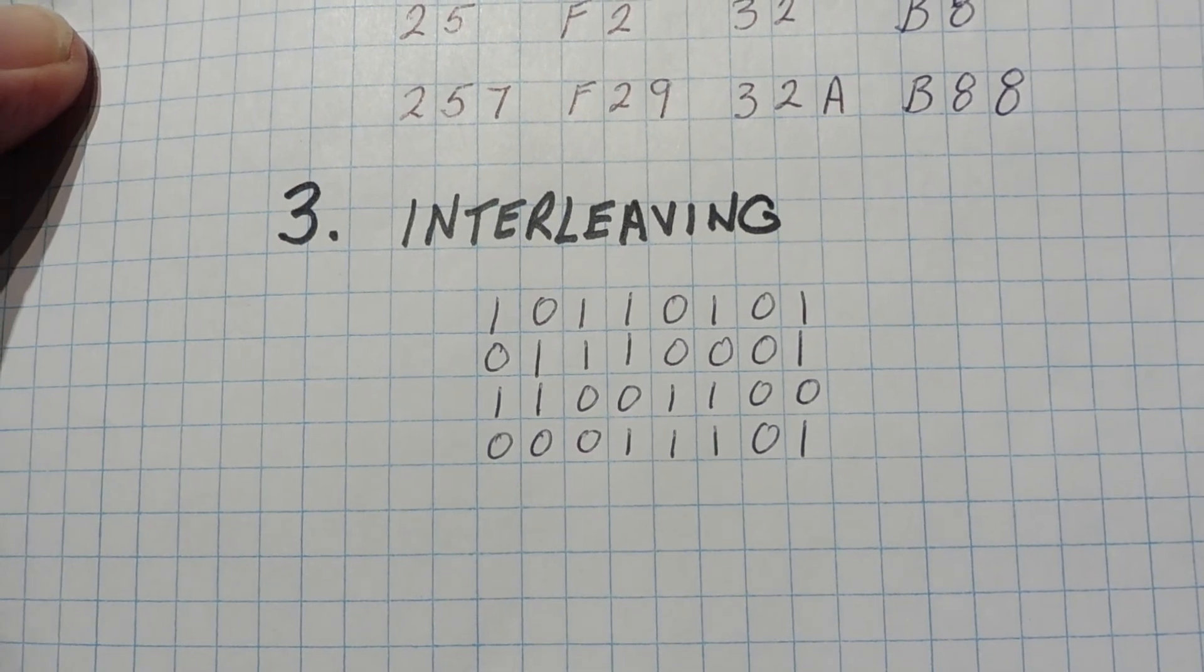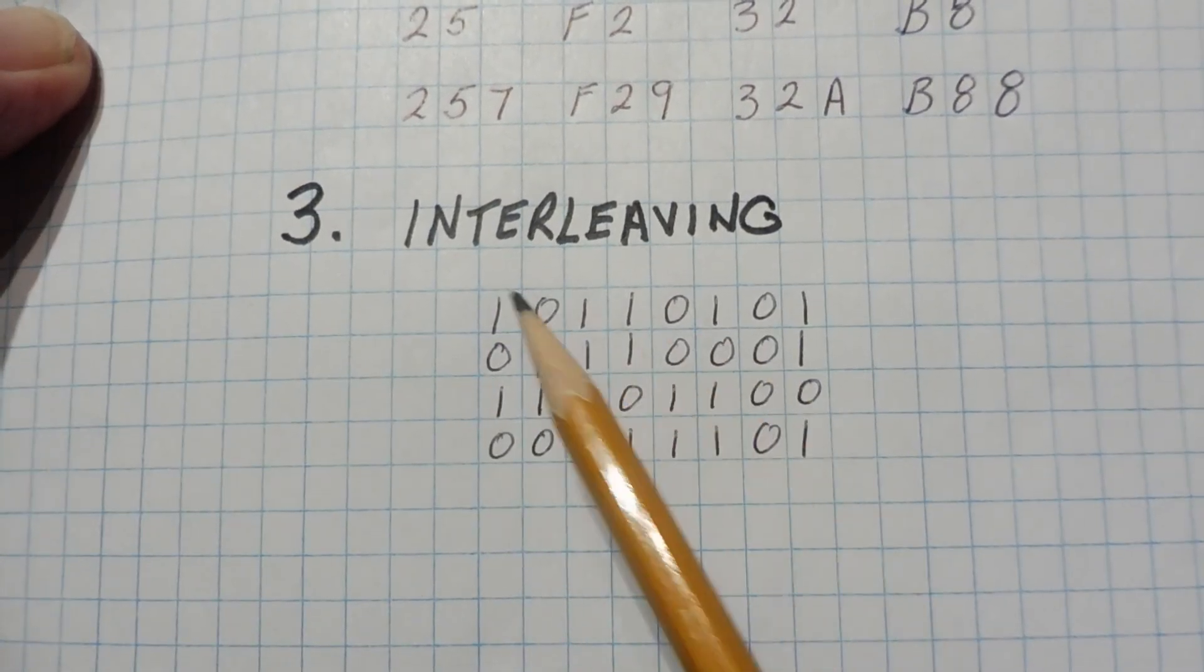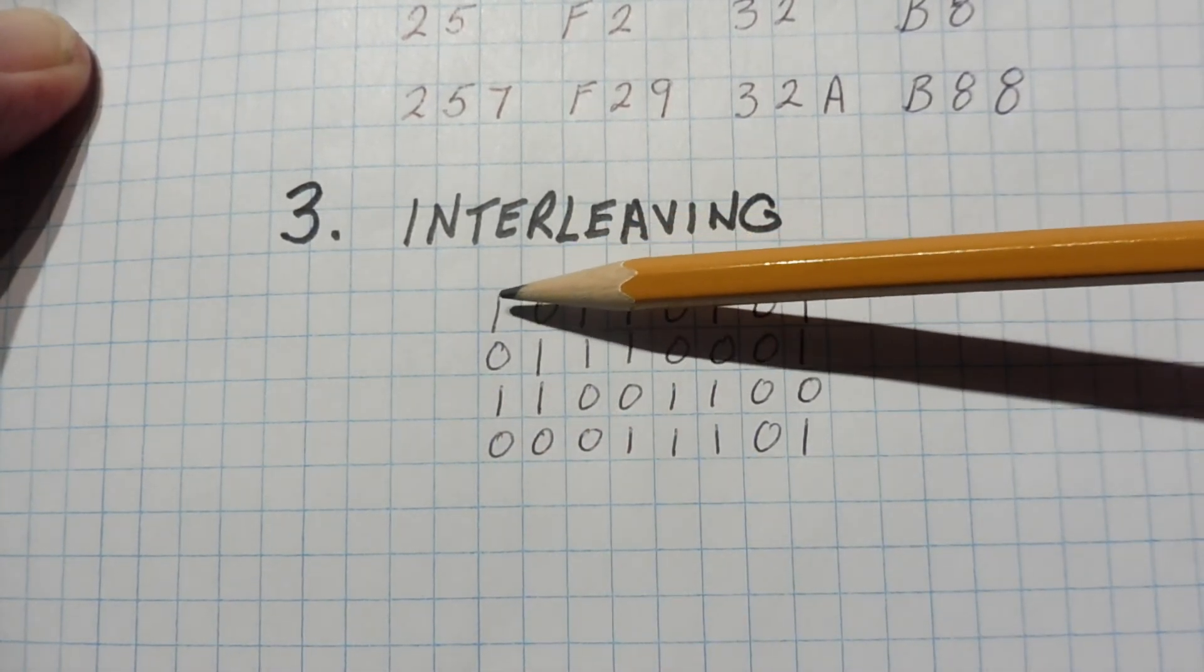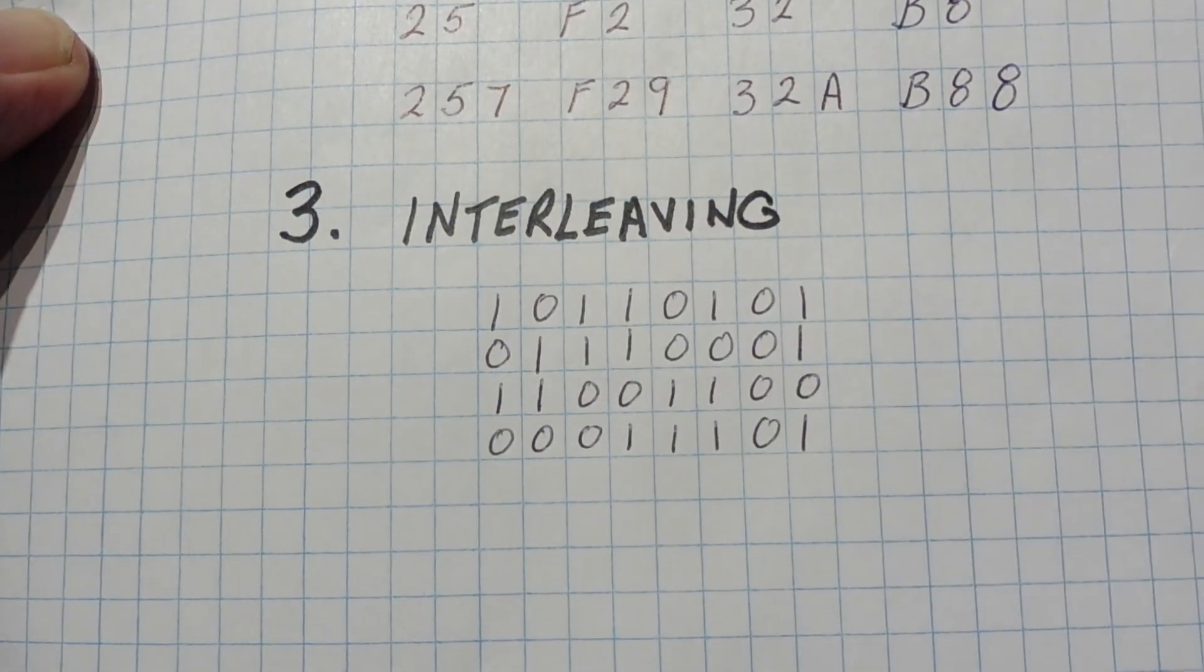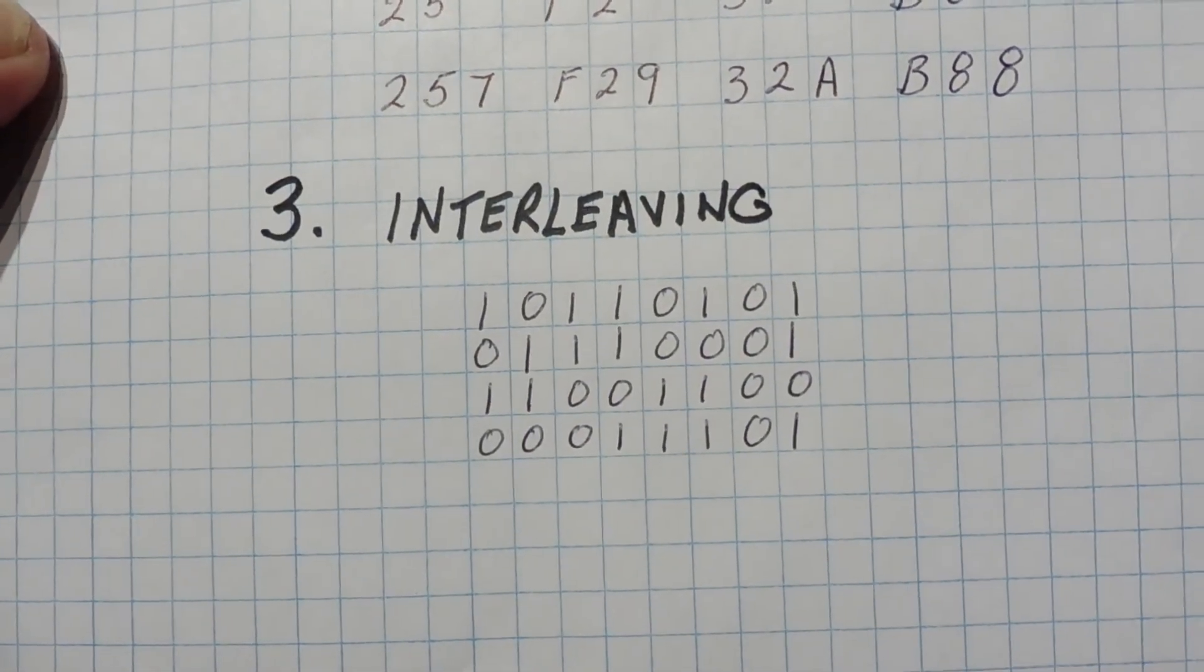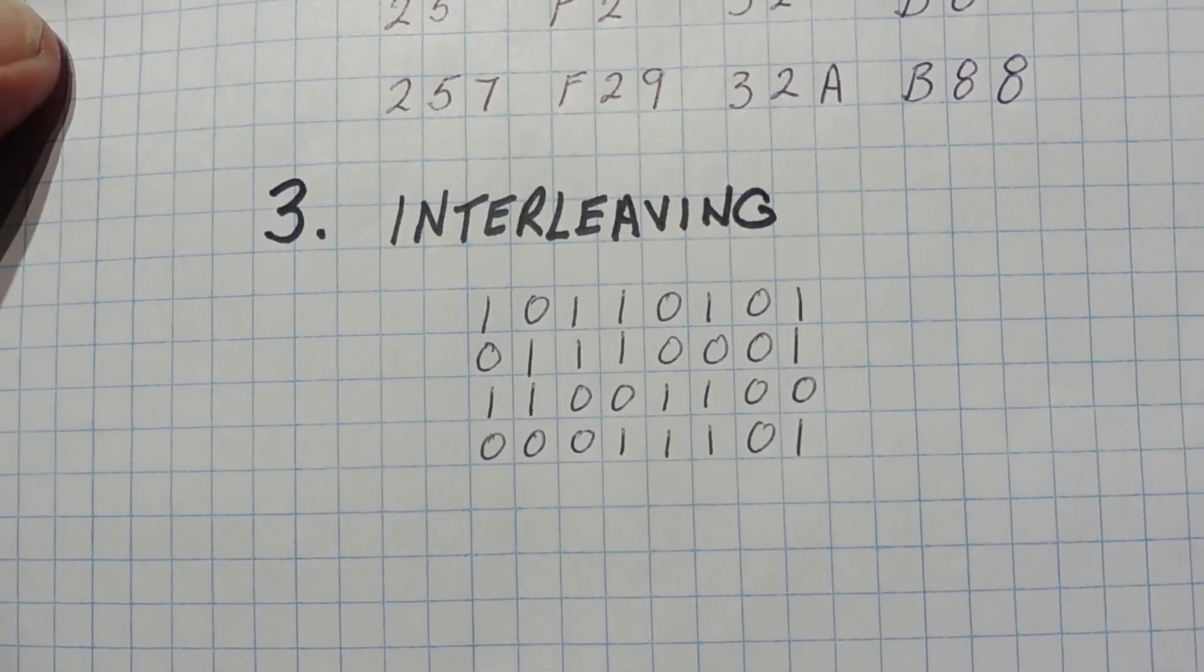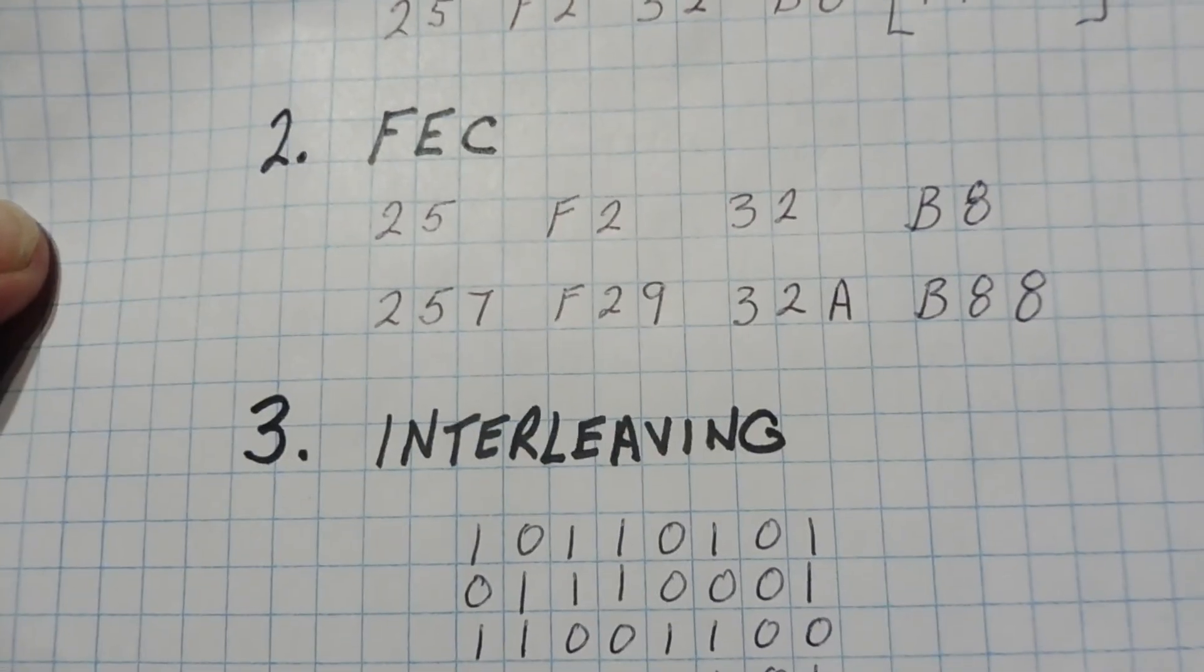The last thing that we're going to look at is interleaving. You can see here. So this is the data that we want to send in binary. So instead of sending it 1, 2, 3, 4 by rows, we send it by columns. So we send this column, then this one, then this one. That way we're interleaving the data. So as the data is being sent, if there's any errors, most likely there'll be single bit errors. Then we could use the error correction to solve our problems.